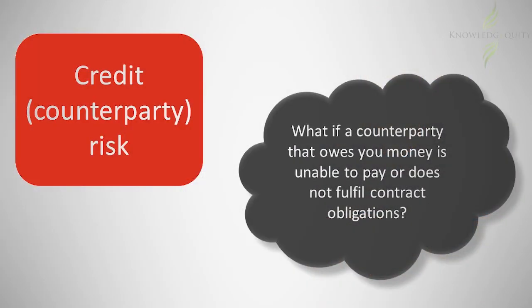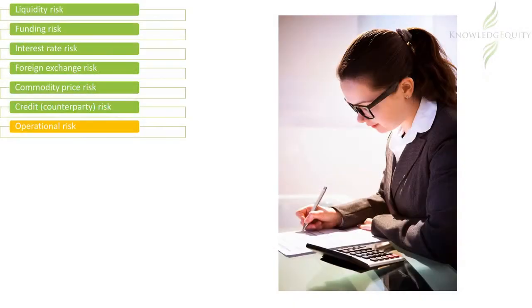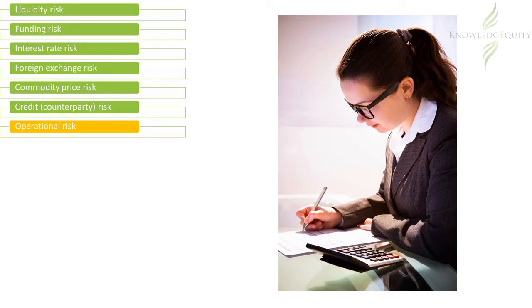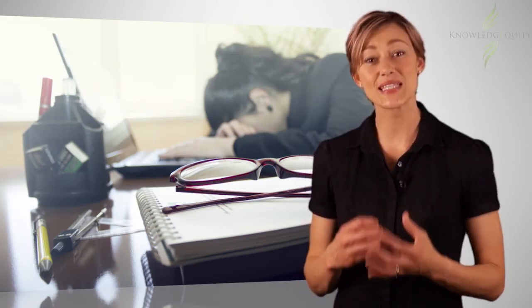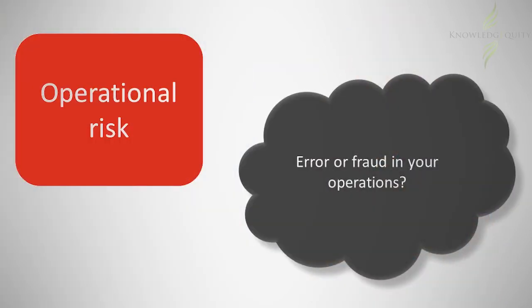When it comes to financial institutions or treasury and similar operations within organisations, there is always a chance of human error or fraud taking place, which can have an effect on the financial outcomes and objectives of the organisation. Consider, for example, an administrative clerk in the treasury function who processes bank transfers and accidentally adds an extra zero to the dollar amount of a transaction. Or consider the situation where the clerk was acting fraudulently and transferred funds into their own bank account for fake deals that had not been authorised. These are examples of operational risk.